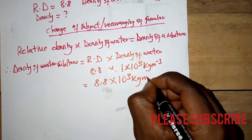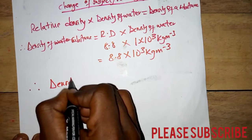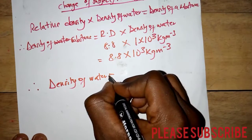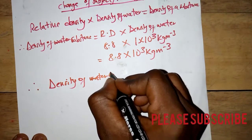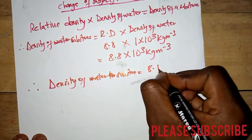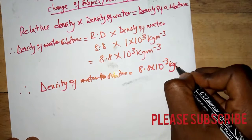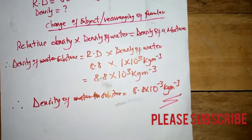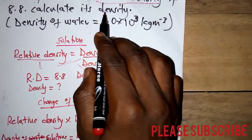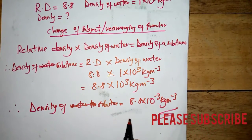So the density of the substance is 8.8 times 10 to the power 3 kilograms per meter cube. And this is what we have for the density — that is the final answer.